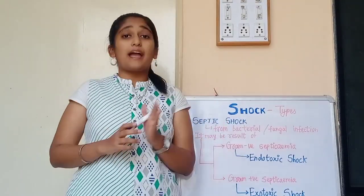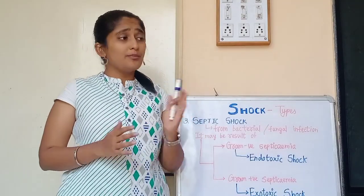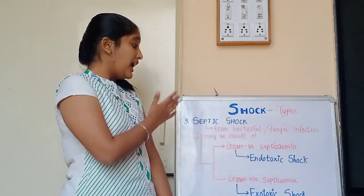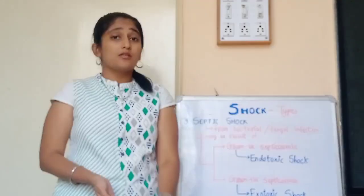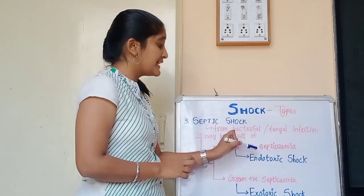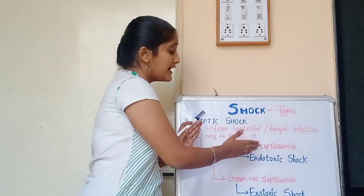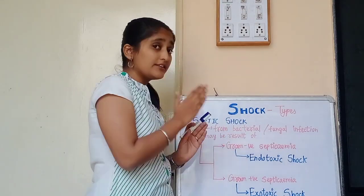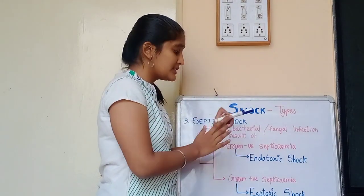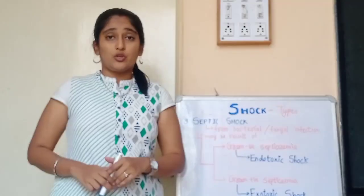Septic shock may result from bacterial and fungal infection. When caused by gram-negative bacteria, it is known as gram-negative septicemia and the shock is known as endotoxic shock. When caused by gram-positive bacteria, it is known as gram-positive septicemia and is called exotoxic shock.